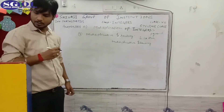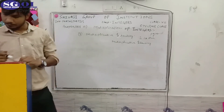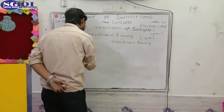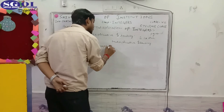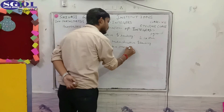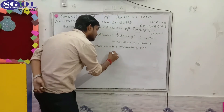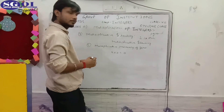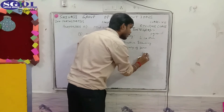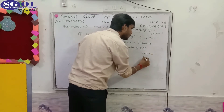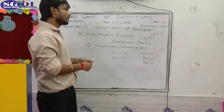Now I will tell you the multiplicative property of zero. For every integer, the multiplicative property of zero means that if you multiply any integer by zero, the result is zero. So b × 0 = 0. For example, 2 × 0 = 0, and (-3) × 0 = 0. This is called the multiplicative property of zero.